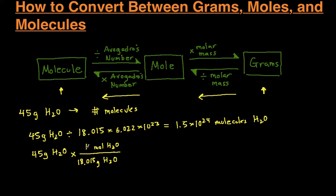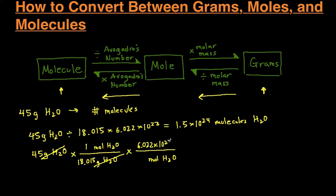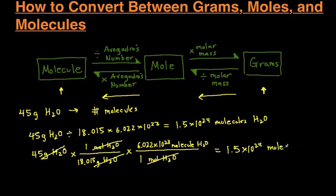For moles, there's always going to be 1 mole in front when converting between grams, moles, and molecules. Doing that, the grams of H₂O cancel each other out and you're left with moles of water. Now we have moles of water and we want to get to molecules of water. Looking at the arrow, we multiply by Avogadro's number — 6.022 times 10 to the 23 — and we're trying to get to molecules, so molecules of H₂O goes on top. The moles of H₂O cancel each other out, and we get 1.5 times 10 to the 24 molecules of H₂O.